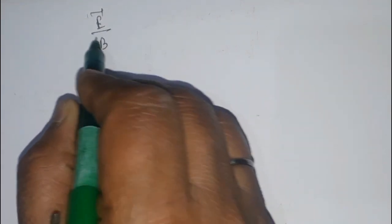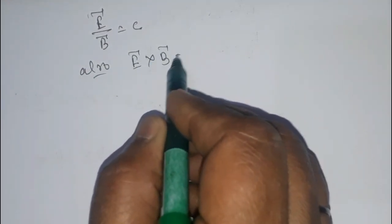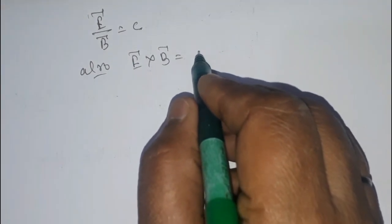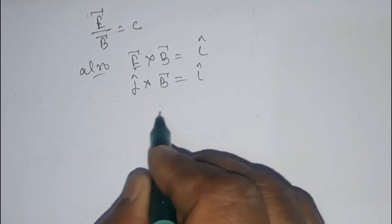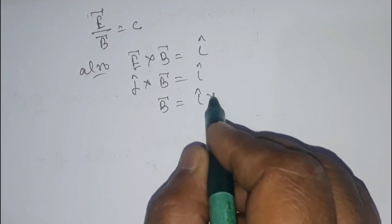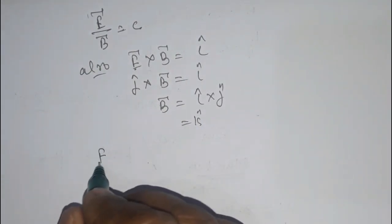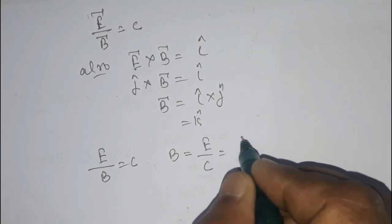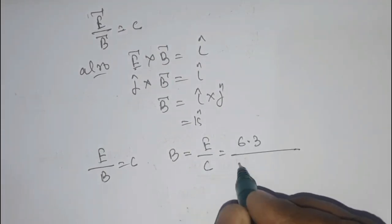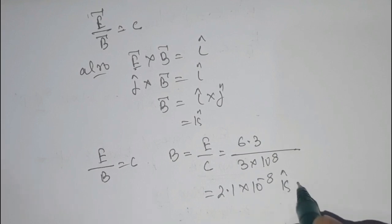We know two things: E upon B equals c, and E cross B gives the direction of propagation of the wave, which is i-hat. Since E is in j-hat direction, using the cross product rule, i cross j gives k — so B is in the k-hat direction. The magnitude is B = E/c = 6.3 divided by 3×10⁸, giving 0.1×10⁻⁸ k-hat Tesla.